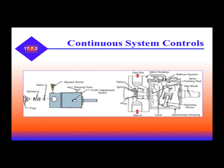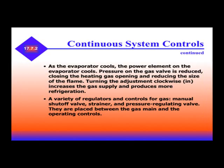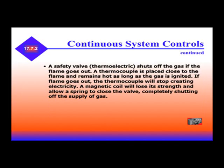On the left-hand side you can see the power element. As the evaporator cools, the power element cools, pressure on the gas valve is reduced, closing the heat gas opening and reducing the flame size. Turning the adjustment counterclockwise increases the gas supply and produces more refrigeration. A safety valve shuts off the gas if the flame goes out. A thermocouple placed close to the flame remains hot as long as gas is igniting. If the flame goes out, the thermocouple will stop creating electricity, the magnetic coil will lose its strength, and a spring will close the valve, completely shutting off the gas supply.